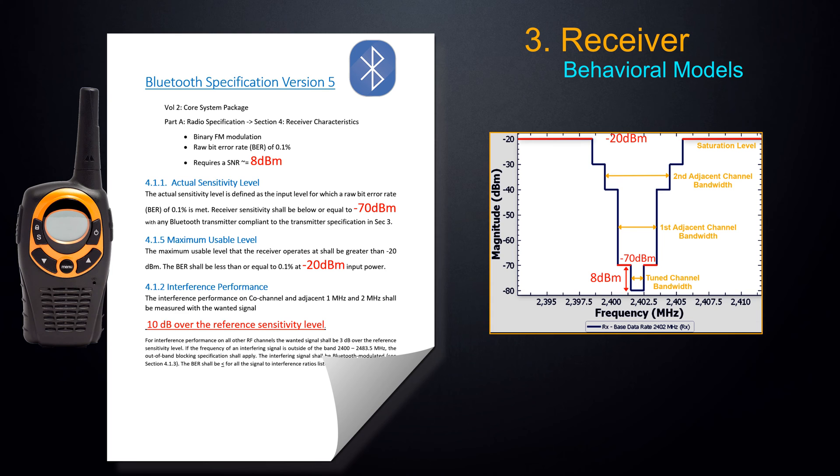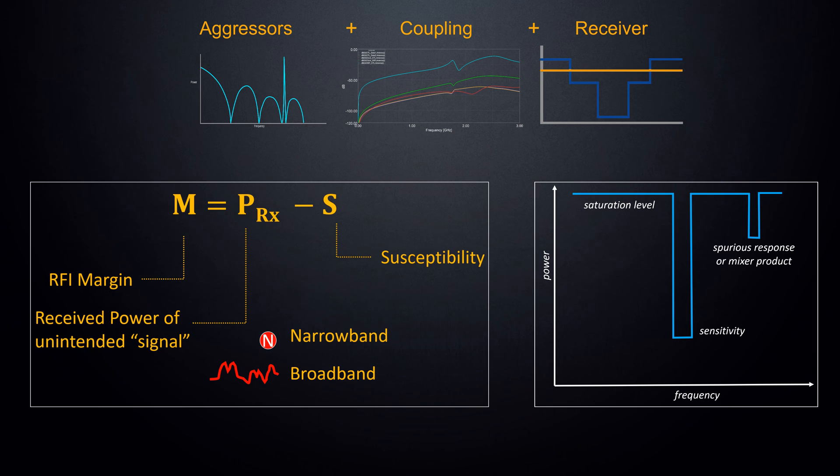Similarly, there are models for other radios included in EMIT's library. The aggressor spectra, coupling, and receiver susceptibility can all be combined in what we call a power flow analysis, resulting in an algebraic expression. By this convention, a positive margin indicates a potential problem.